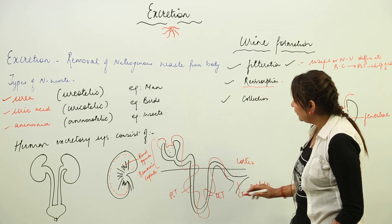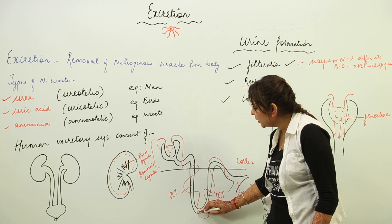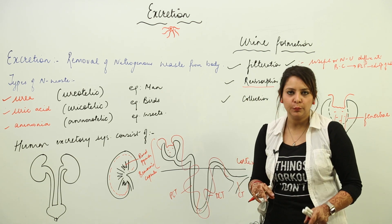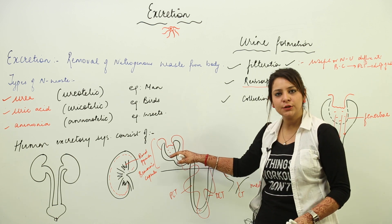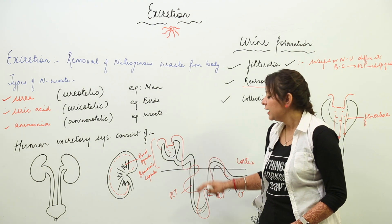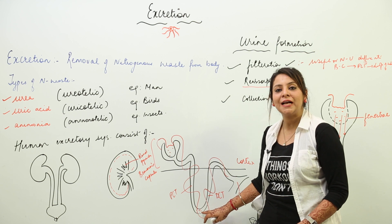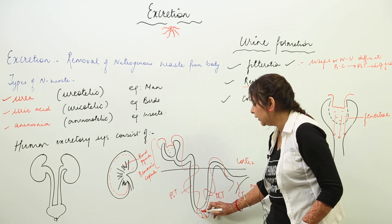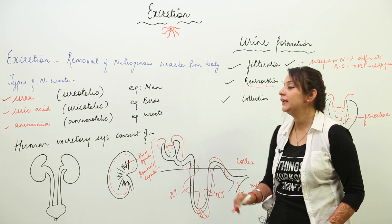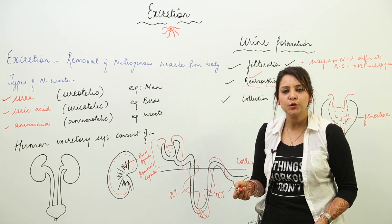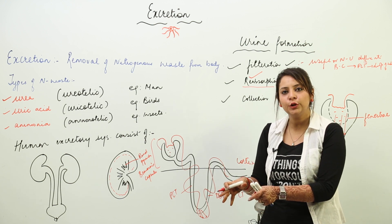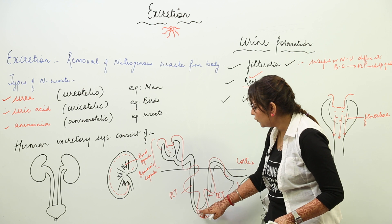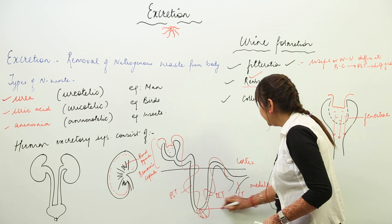When the substances reach the loop of Henle, those which are useful for the body are put back into the capillary blood — this is what we call reabsorption. The substances which are useful are reabsorbed by the blood, and the remaining ones left over are regarded as waste.